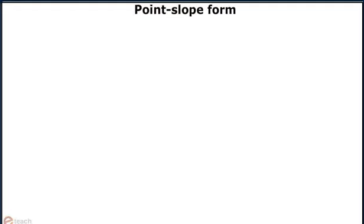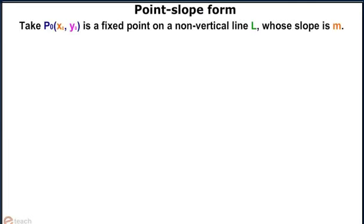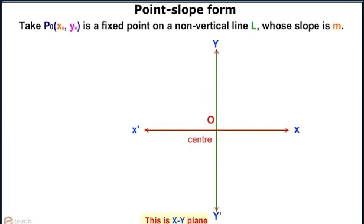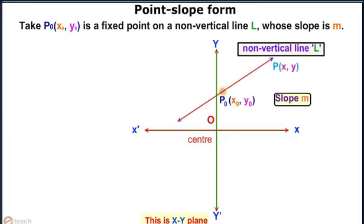Point-slope form of a line. Take point P0 as a fixed point on the non-vertical line L whose slope is m. Let us take another point P having coordinates x, y as an arbitrary point on L.